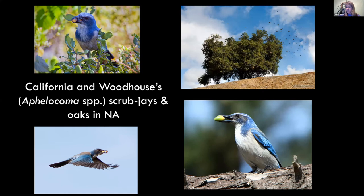Now I'm going to go over a few examples you could observe somewhat locally, at least with California jays — though going west, we do have Woodhouse's jays. I'm not going to give an exhaustive list because scrub jays in particular probably disperse more plants than we are even aware of. They're really important dispersal agents for oaks, but they also take juniper seeds, pine seeds, and sunflower seeds, which they scatter hoard in my yard. There are probably so many relationships we still don't understand because these birds are really intelligent and have a pretty diverse diet.